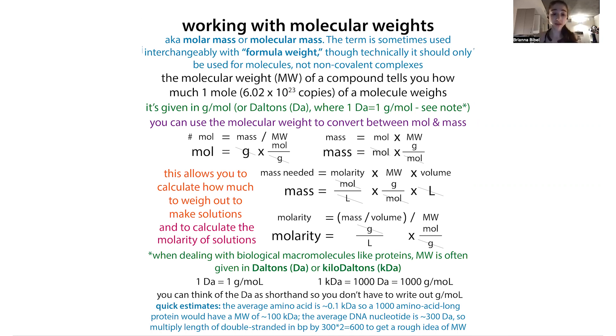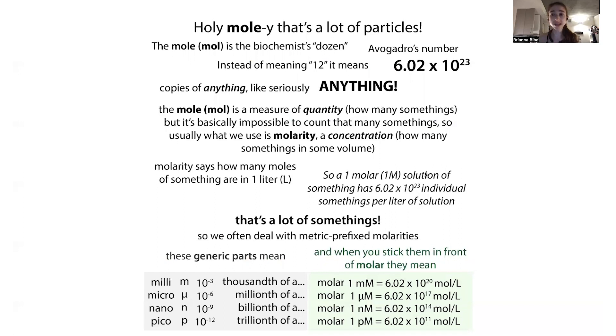So a mole is Avogadro's number, and it just means 6.02 times 10 to the 23rd. I like to think of it kind of like the biochemist's dozen, except it's a lot bigger than a dozen. But it allows us to deal with these really big numbers without having to use really, really big numbers.